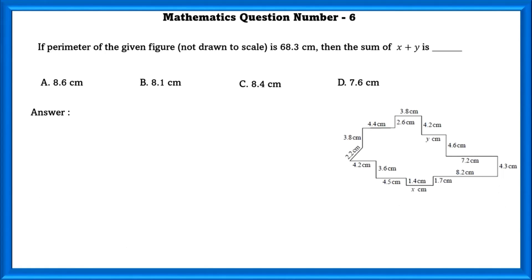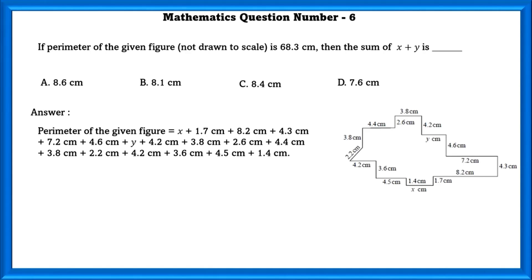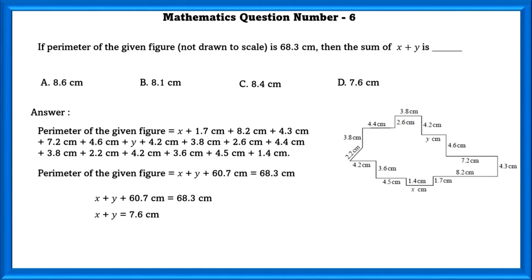Mathematics question number 6. If the perimeter of the given figure, not drawn to scale, is 68.3 cm, then the sum of x plus y is. We can easily find the sum of x plus y by adding all the lengths of the sides, where x and y are two of the sides. So, x plus y equals 7.6 cm.